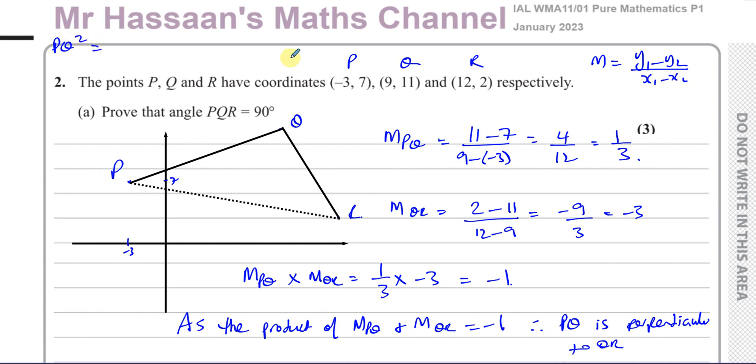I can find that PQ squared, the length of PQ squared is going to be the square root of minus 3 minus 9, that's minus 12 squared which is 144, plus 7 minus 11 which is minus 4 squared which is 16. That gives you the square root of 160. QR squared is going to give you the square root of 9 minus 12 which is 3, 3 squared is 9, plus 11 minus 2 which is 9, and 9 squared is 81. In fact, we don't have to put the square root because we put squared. That's going to give you 90.